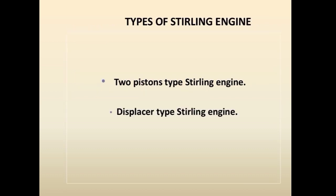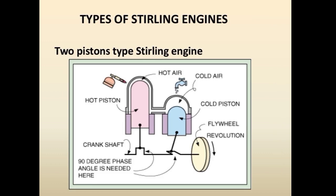Types of Stirling engine: the two-piston type Stirling engine and the displacer type Stirling engine. Looking at the two-piston type, we can see the hot piston, the hot air, the cold air, the cold piston, and the flywheel revolution.